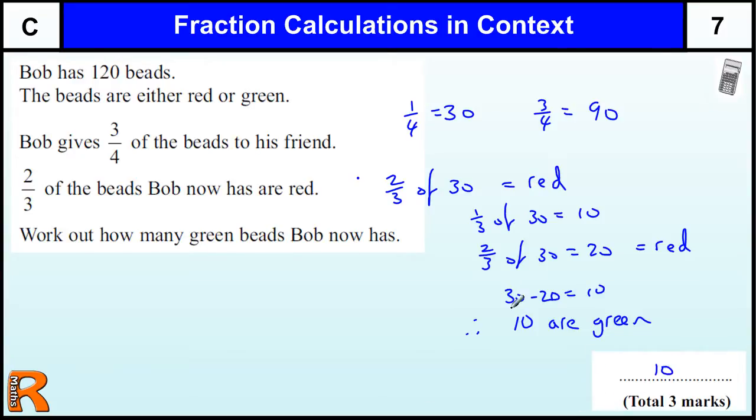Okay, so that is worth three marks. We get some working if we work out that three quarters is 90, or you have done a quarter which is 30, that is one method mark. And then if you do this two thirds to work out the reds, you will find 20 that are red. That is another method mark, and one for the answer.